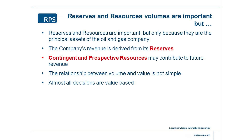The reserves and resource volumes themselves are important, and companies have to report those reserve volumes by statutory requirement. They're important because they're the principal assets of the oil and gas company — almost all of the revenue that an upstream oil and gas company has is derived from producing its oil and gas reserves and resources. The current company's revenue comes from its reserves — those are the barrels of oil or volumes of gas currently in development and in production — while contingent and prospective resources will form the future revenue of the company.